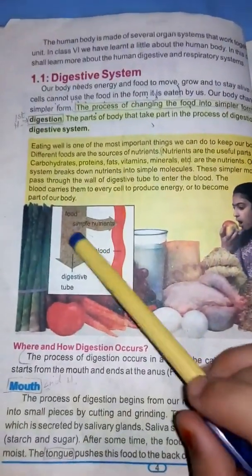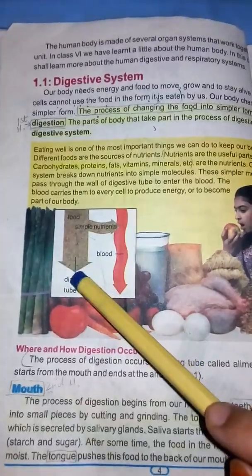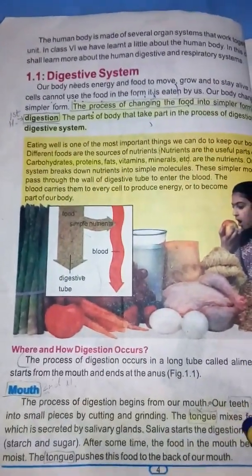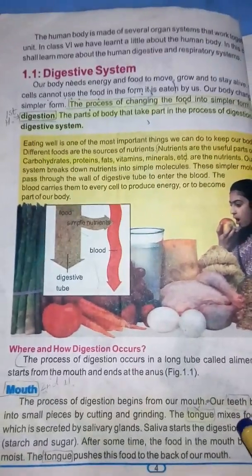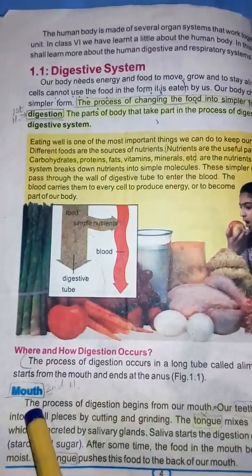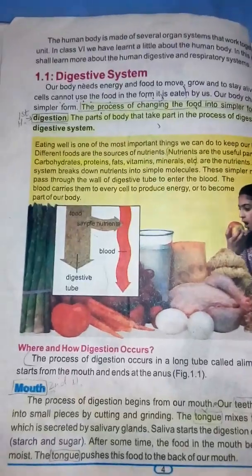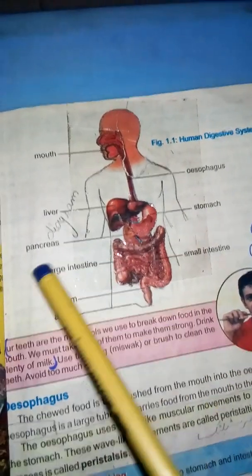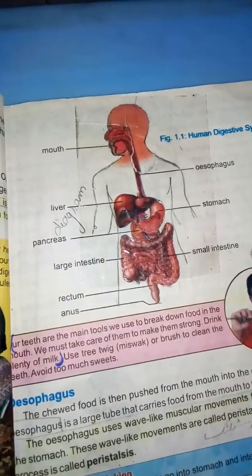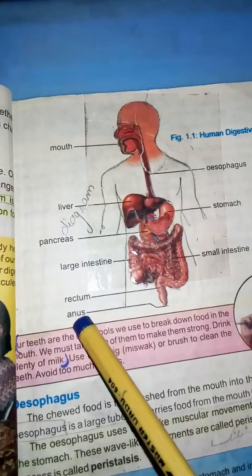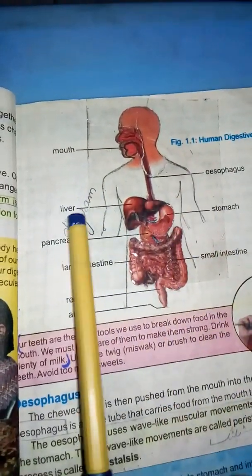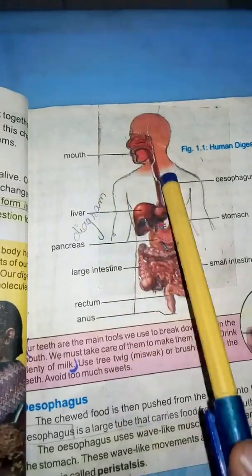When food is eaten, it is converted into simpler form. I hope you understand the digestive system well. Next we will learn about the parts of the digestive system: the mouth, esophagus, liver, stomach, pancreas, large and small intestine, and the anus. Together these are called the digestive system.